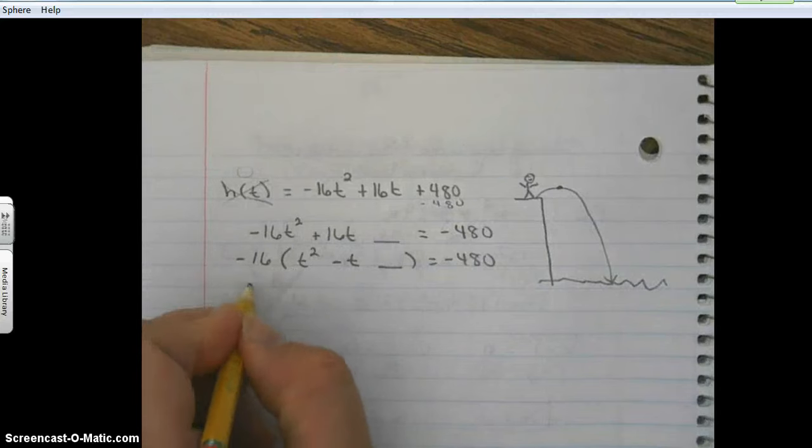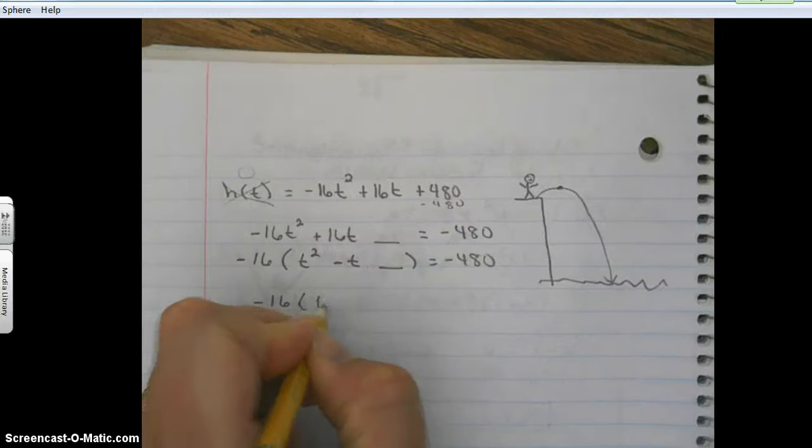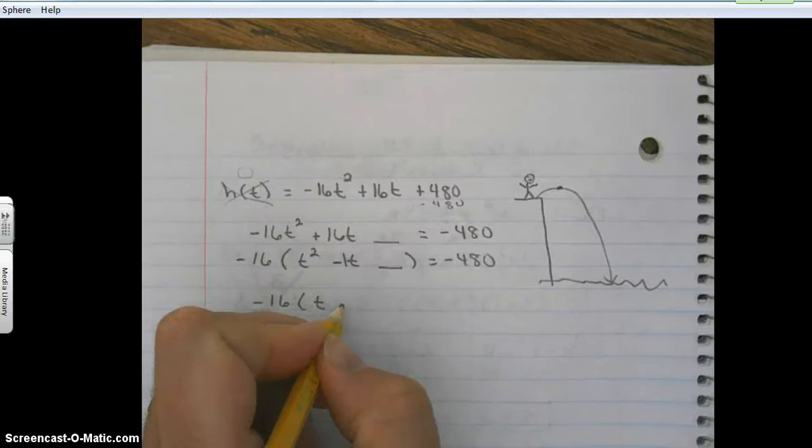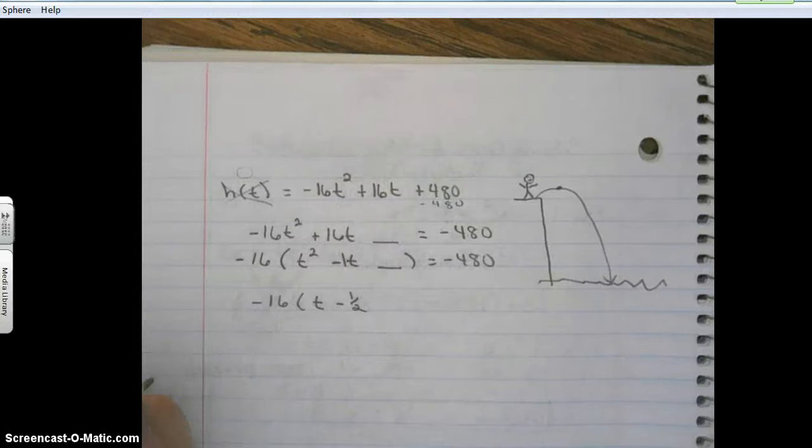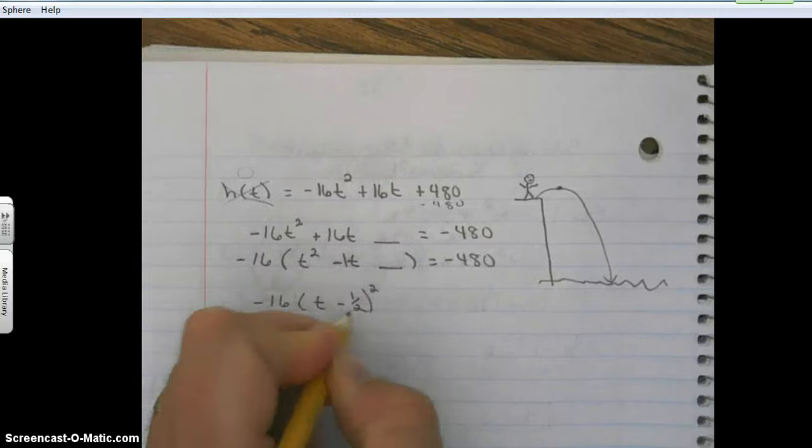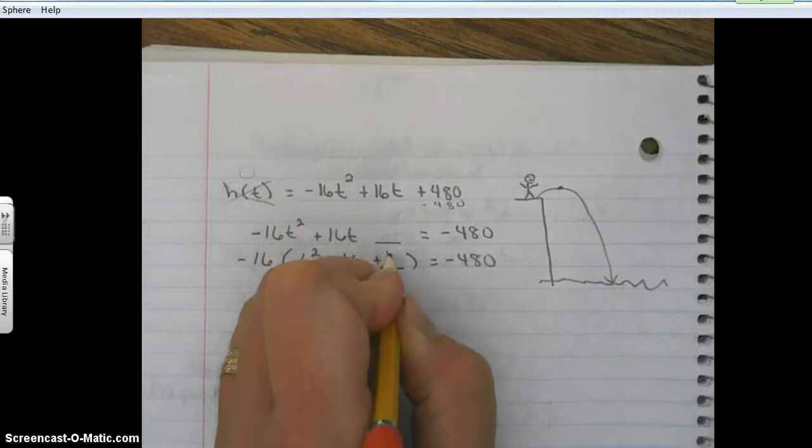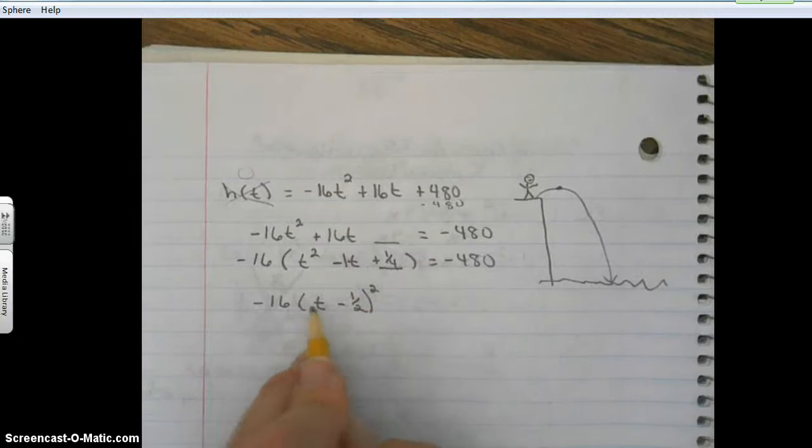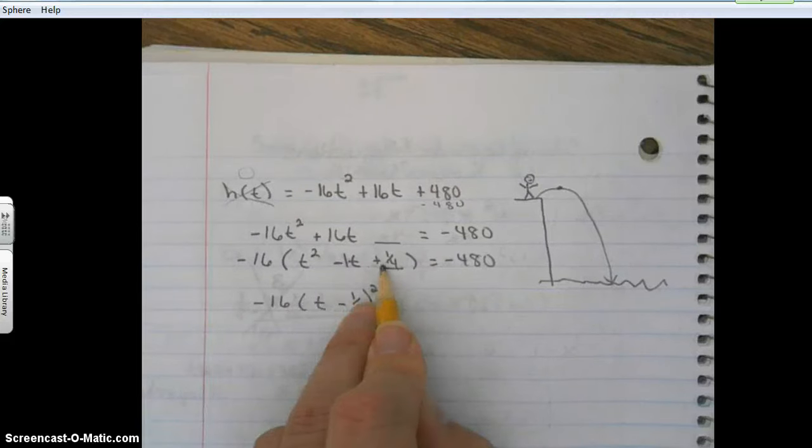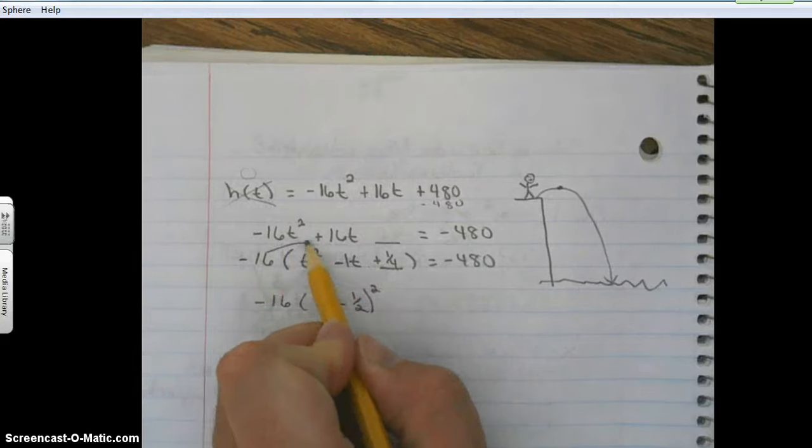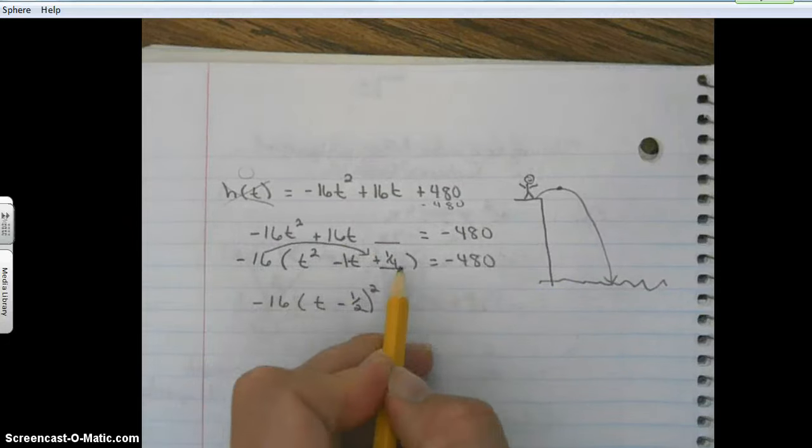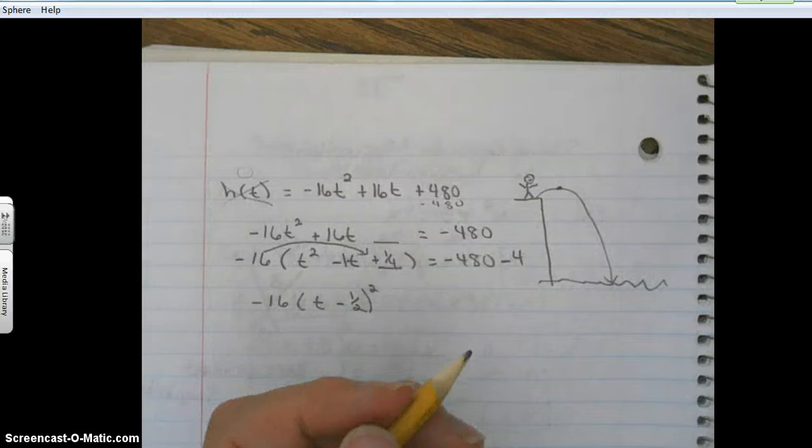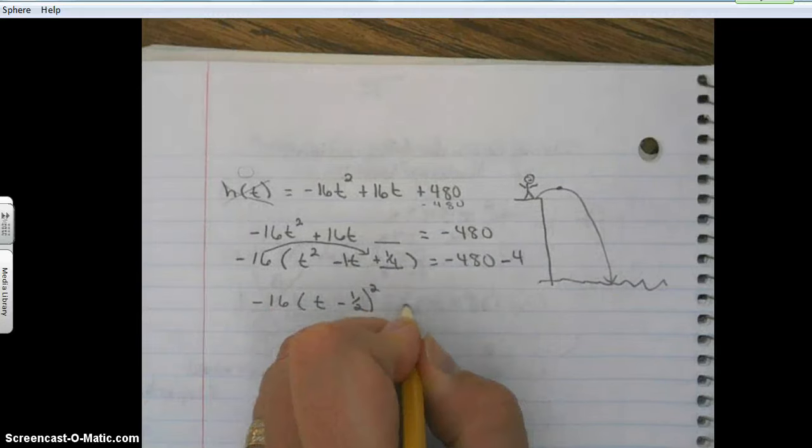Now I'm going to change forms here, make a perfect square. Half of minus one is minus a half, minus half squared is one fourth. I just completed this square, now I have a perfect square. Since we factored out a number, we have to multiply it back in. That's going to be negative 16 times one fourth, which is negative 4. So that's going to give us negative 484.